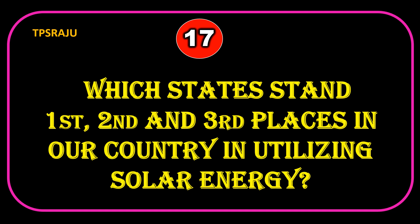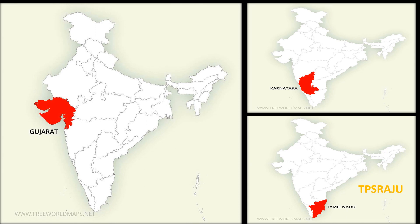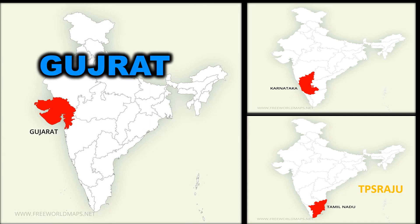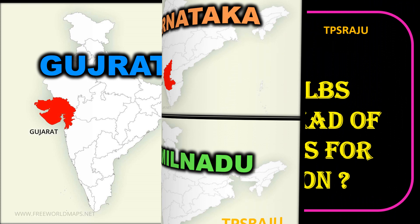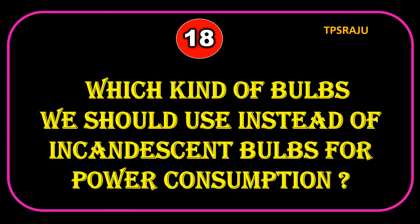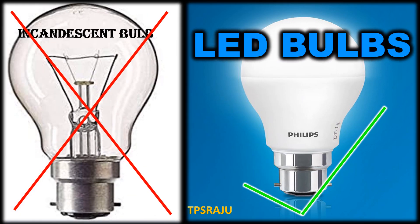Which states stand first, second and third places in our country in utilizing solar energy? First place: Gujarat. Second place: Karnataka. Third place: Tamil Nadu. Which kind of bulbs should we use instead of incandescent bulbs for reduced power consumption? LED bulbs.